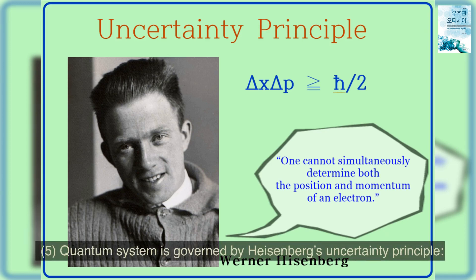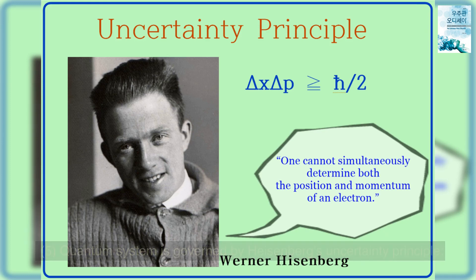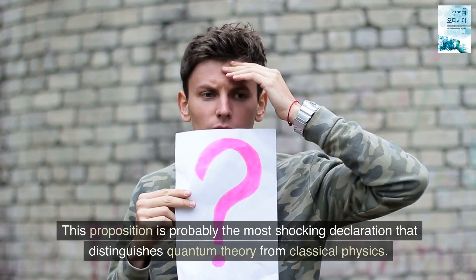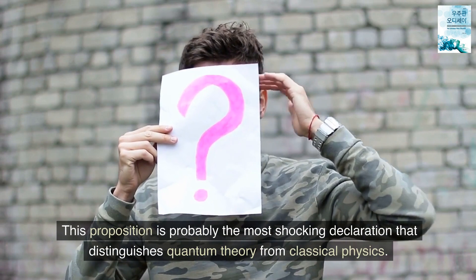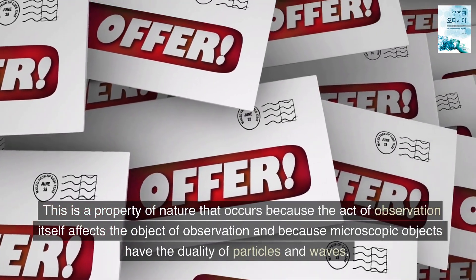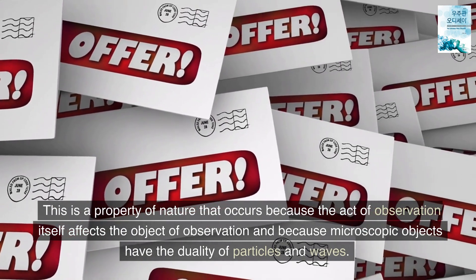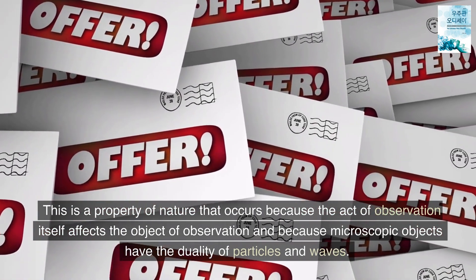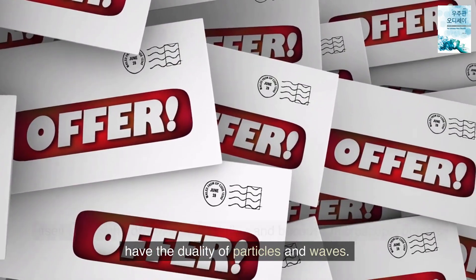5. Quantum system is governed by Heisenberg's uncertainty principle. This proposition is probably the most shocking declaration that distinguishes quantum theory from classical physics. This is a property of nature that occurs because the act of observation itself affects the object of observation and because microscopic objects have the duality of particles and waves.